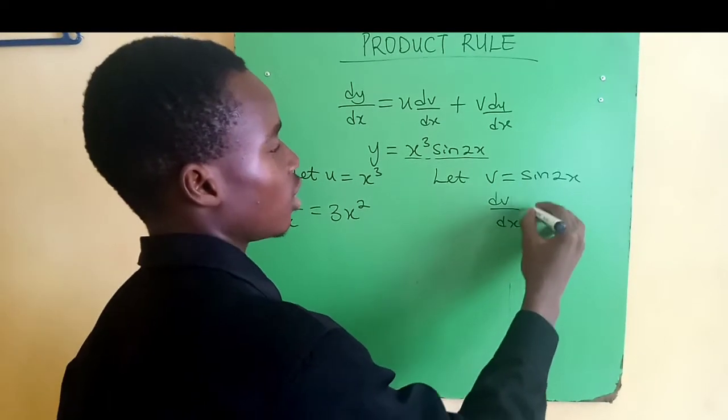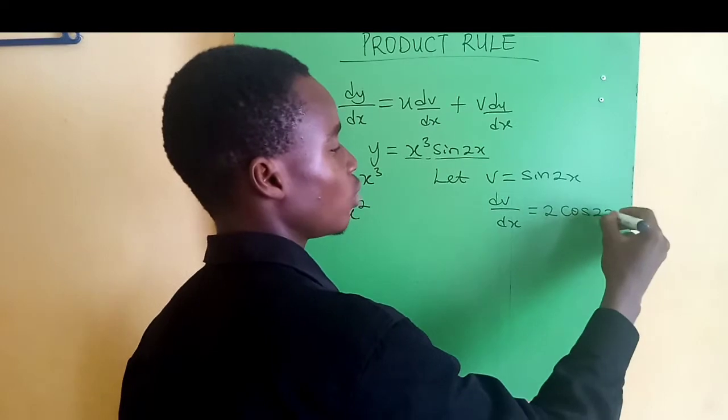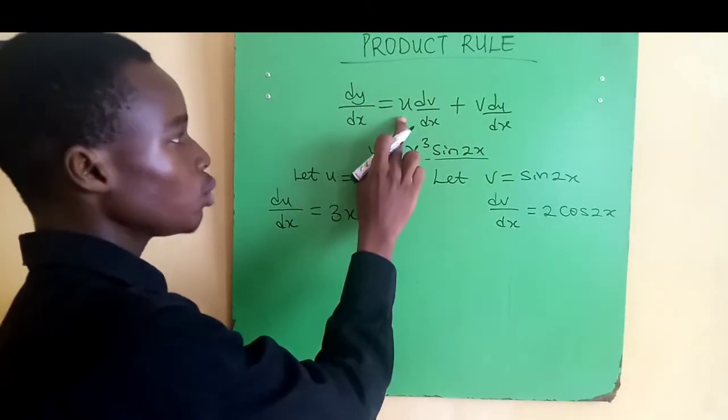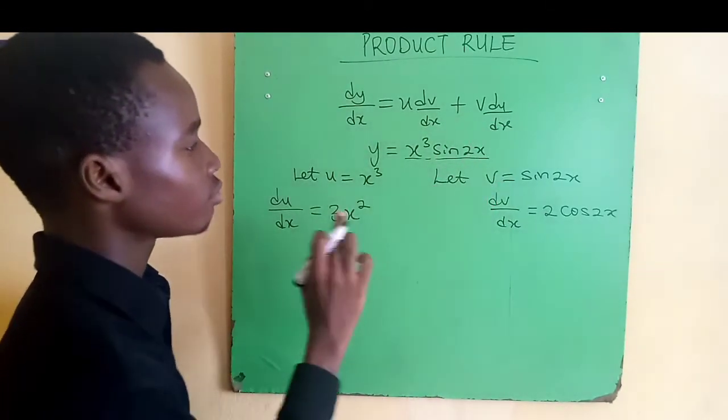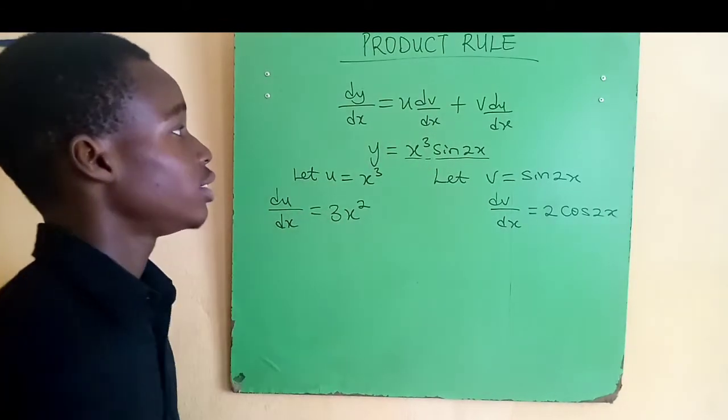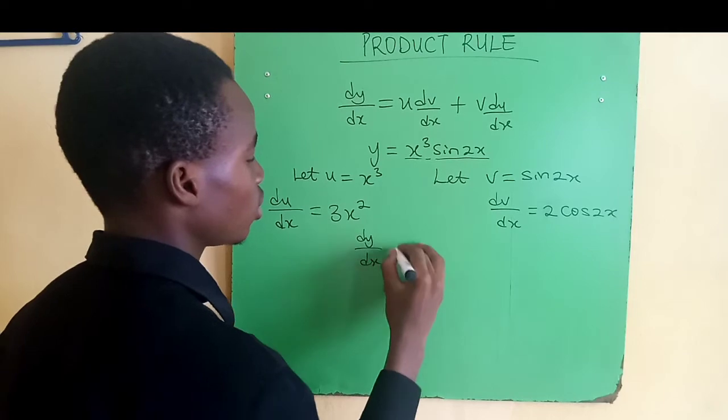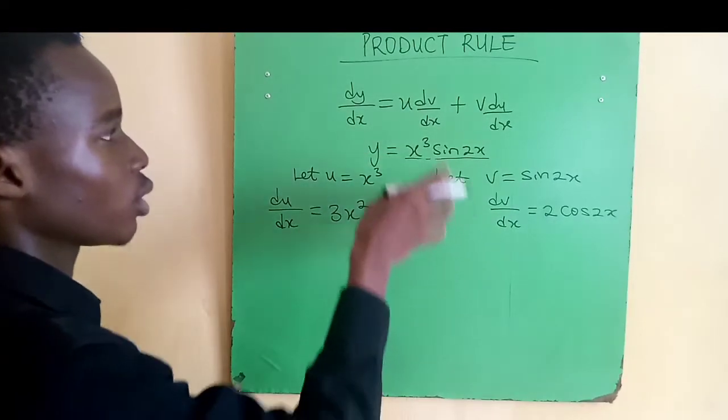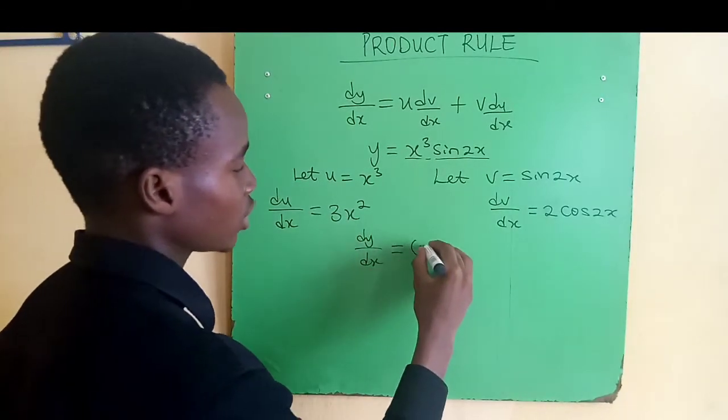So now we have gotten our u, we have gotten dv/dx, we have gotten our v, and we have gotten du/dx. And to get the derivative, that's dy/dx, we just substitute each and every one of these things we have gotten into this formula. So u, we have x cubed.